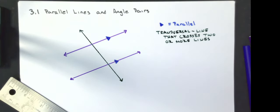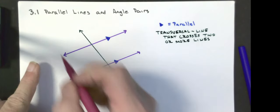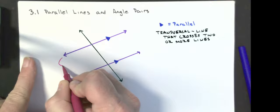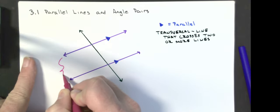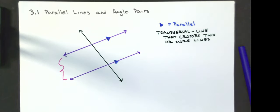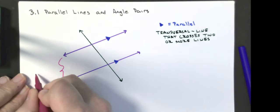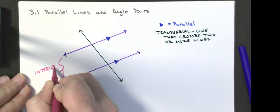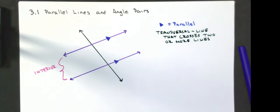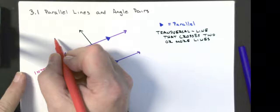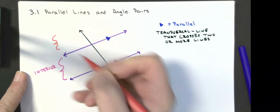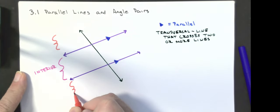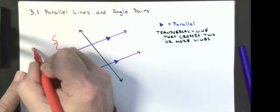With this relationship, I've got some different regions I want to talk about. The region right here in between the parallel lines I call interior, and the parts that are outside the parallel lines we're going to call exterior.